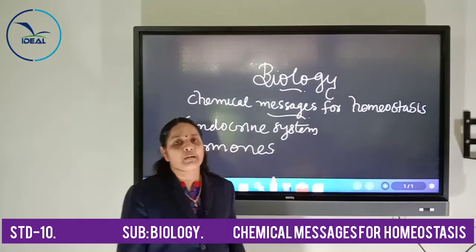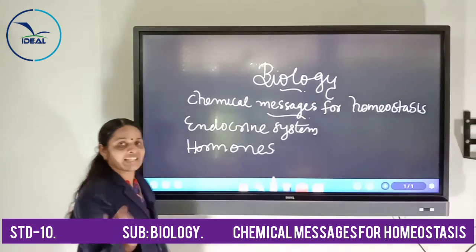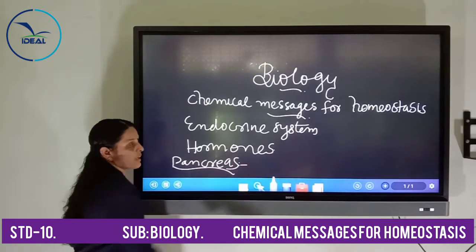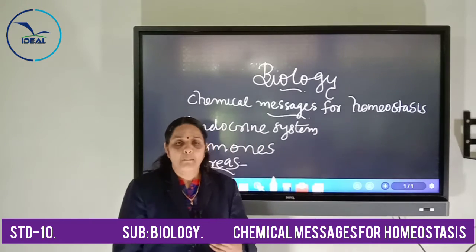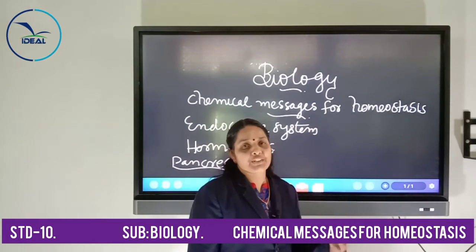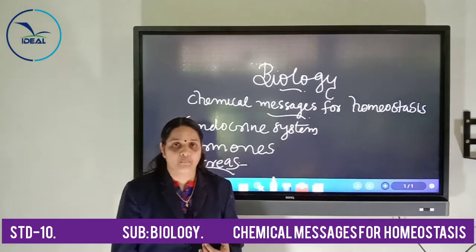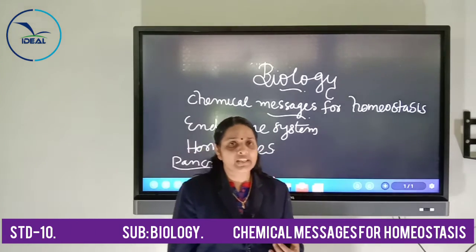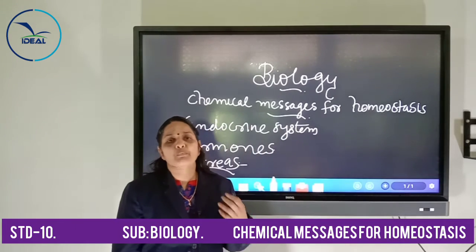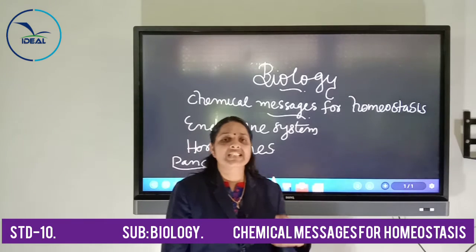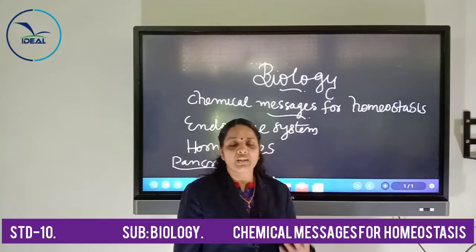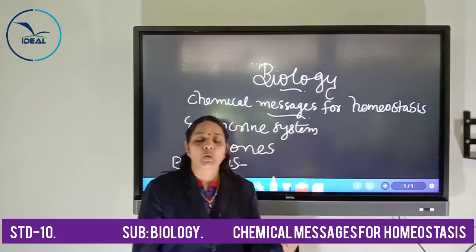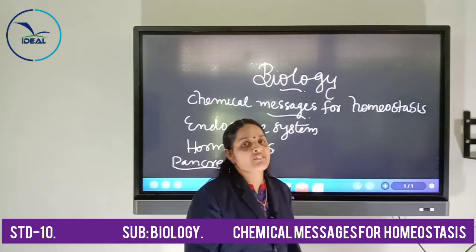Today we are going to discuss the endocrine gland that is the pancreas. I think all of you have heard about the pancreas, because it is the digestive gland you already studied in the digestive system. The speciality of the pancreas is that it is both endocrine and exocrine. Exocrine means it acts as a digestive gland, producing digestive juices responsible for breaking down complex organic food items into simpler molecules. At the same time, it acts as an endocrine gland by producing hormones that regulate our body activities.